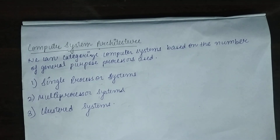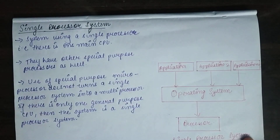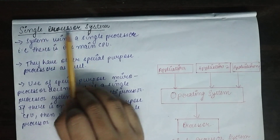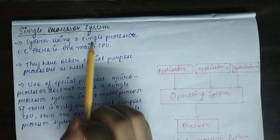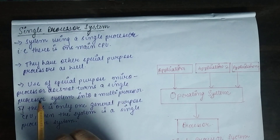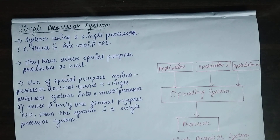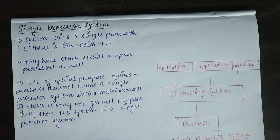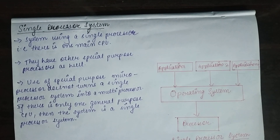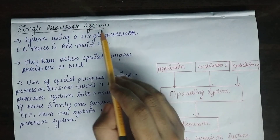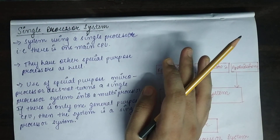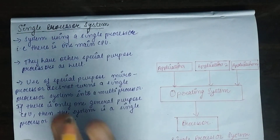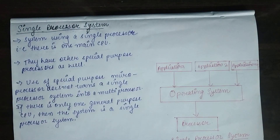The first category is single processor systems, which means there is only one CPU. This system will have other special purpose processors, but those special purpose processors do not turn a single processor system into a multi-processor system. When we say single processor, that means there is only one general purpose CPU.